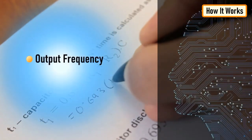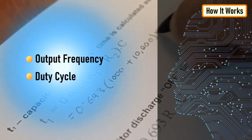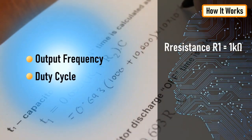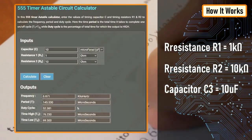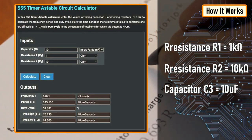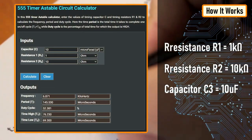Now, let's calculate the output frequency and the duty cycle of the output waveform. In my setup, I have resistance R1 equal to 1 kilohm, R2 as 10 kilohm and capacitor C as 10 microfarad. There are many online calculators to calculate this online. I'll provide a link to one of the astable calculators in the description below.